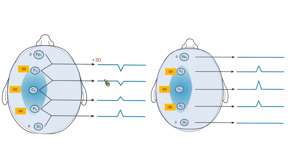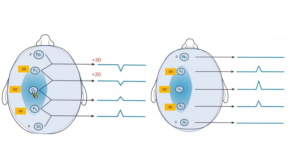The positive 30 amplitude gives a downward wave. Looking at the second line: input one is F3 and input two is C3. The difference is negative 30 minus negative 50, giving positive 20 — so we also get a downward wave, but with a smaller amplitude than the positive 30. For the third line, input one is C3 and input two is P3: negative 50 minus negative 30 gives negative 20, resulting in an upward wave. For the last line, input one is P3 and input two is O1: negative 30 minus zero gives negative 30, also an upward wave.